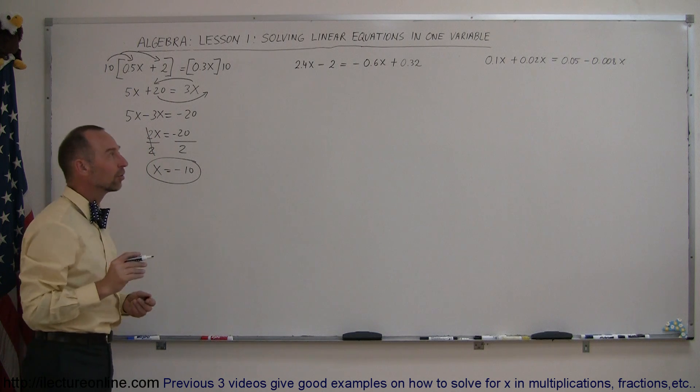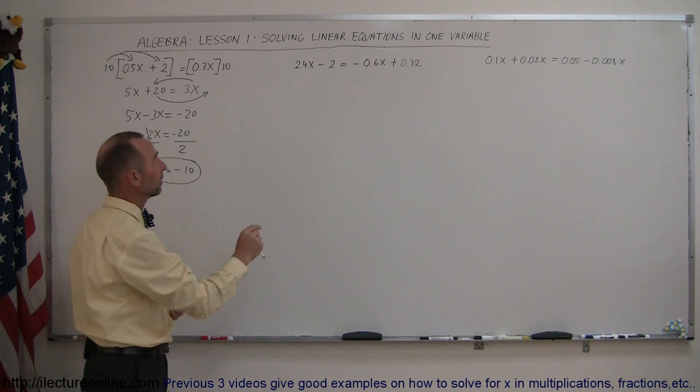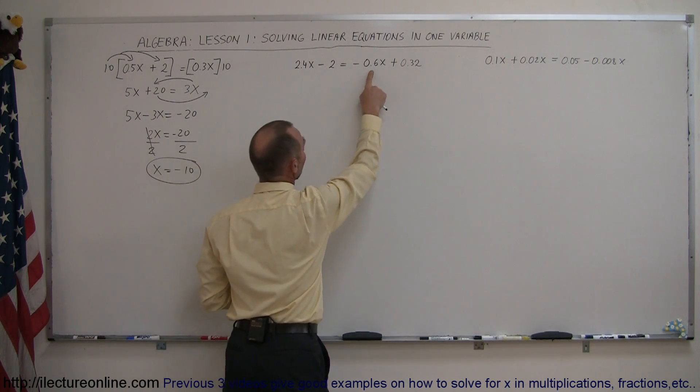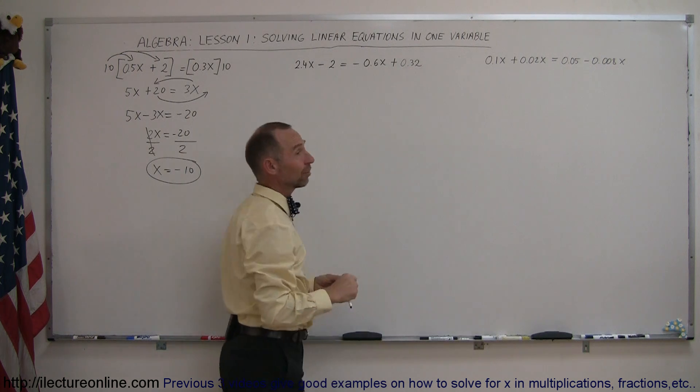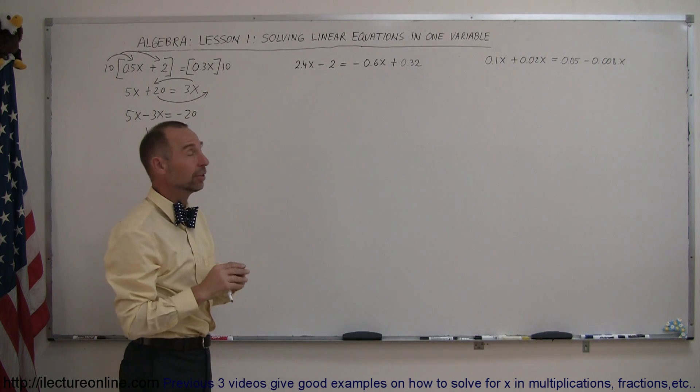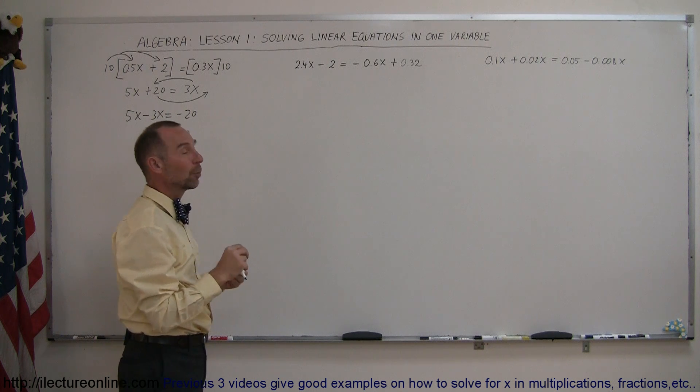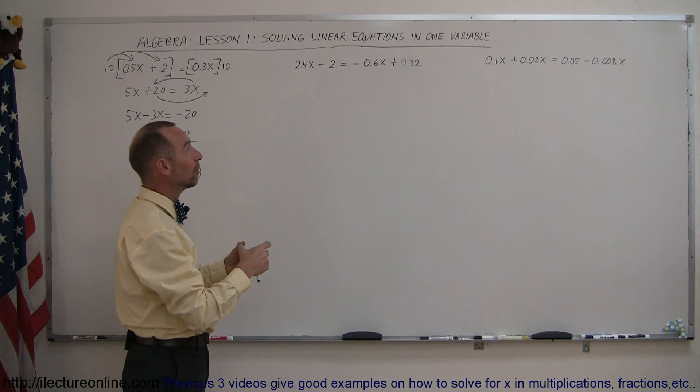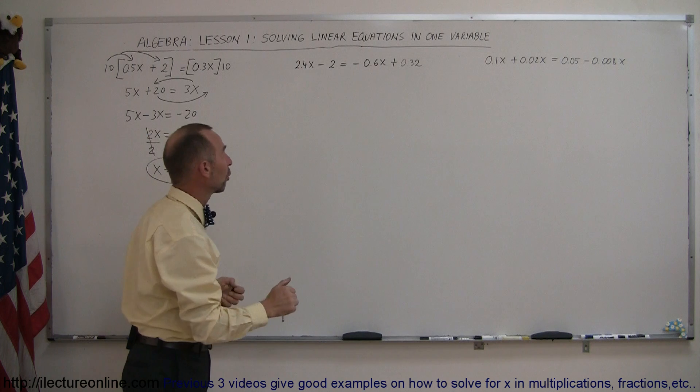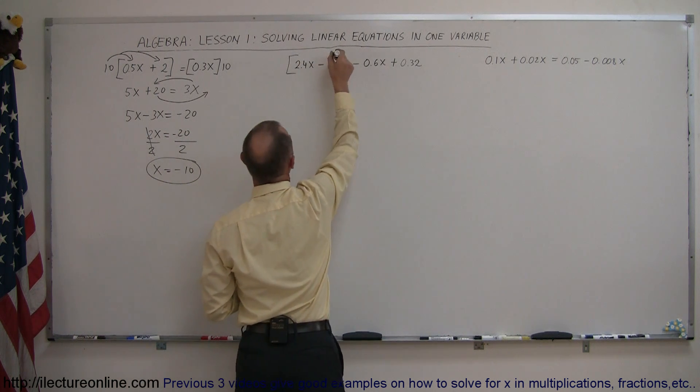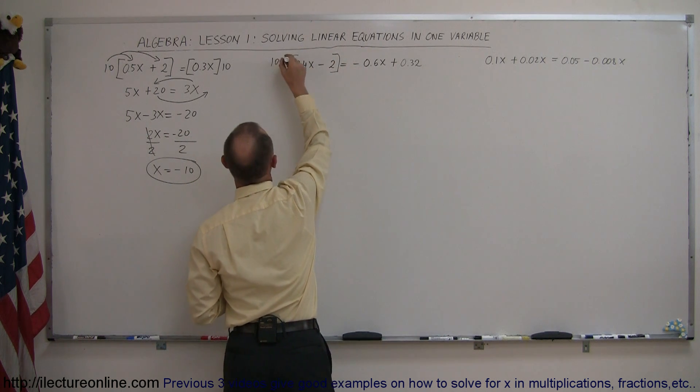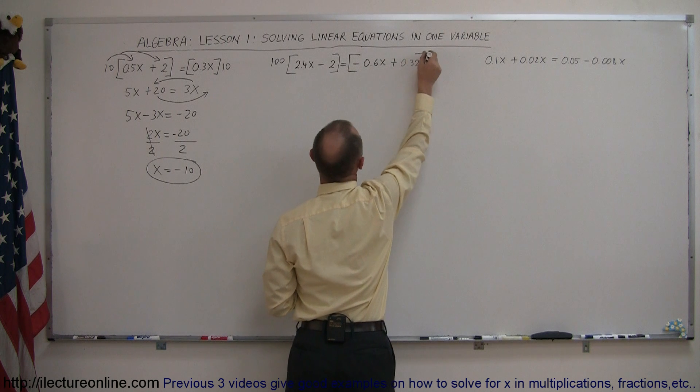When we now look at our second example, we notice that there's one decimal place here, one decimal place there, but two decimal places there. So in this case, we're going to have to multiply both sides by 100. You always find the number with the greatest number of decimal places, and then multiply both sides equation accordingly. So we're going to multiply the left side by 100, we're going to multiply the right side by 100.